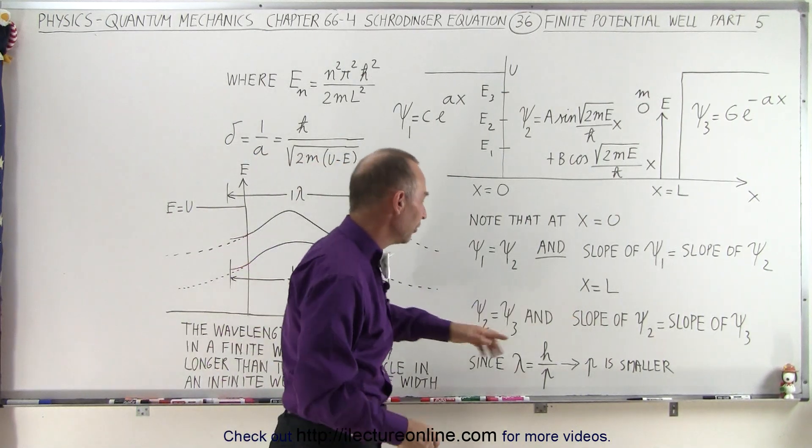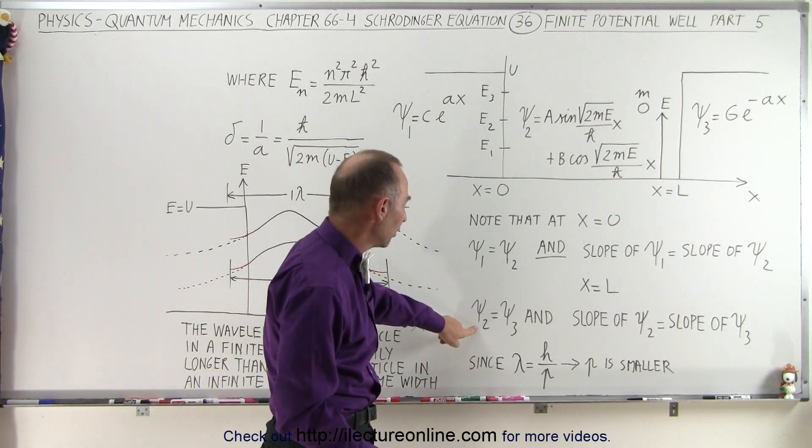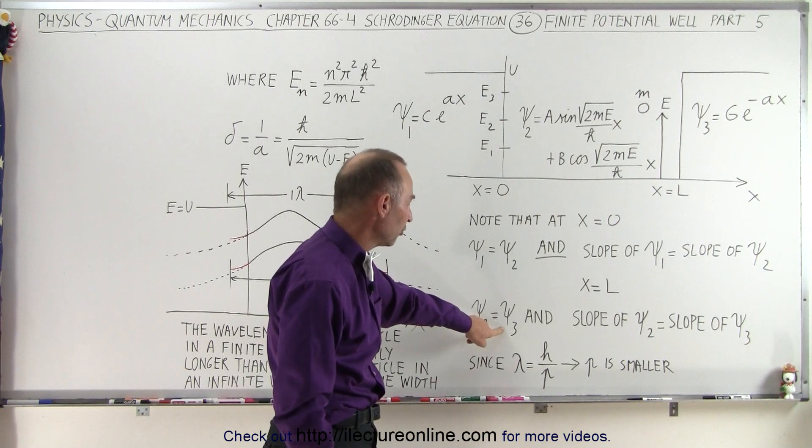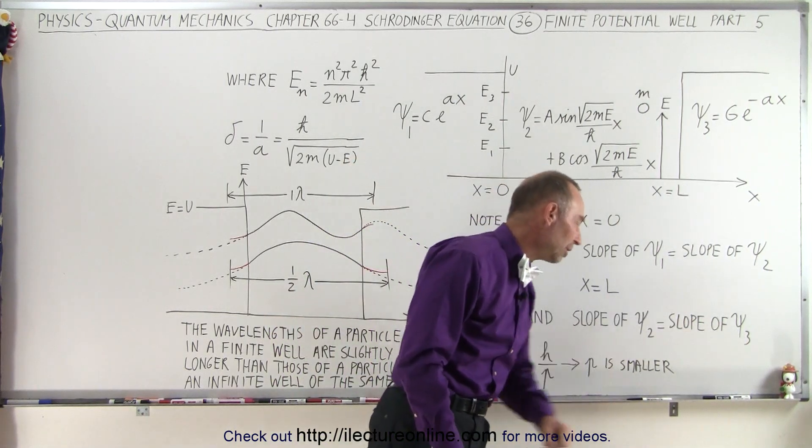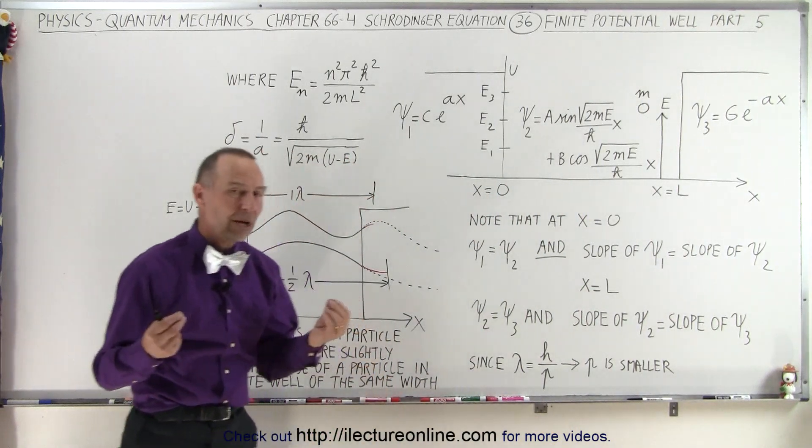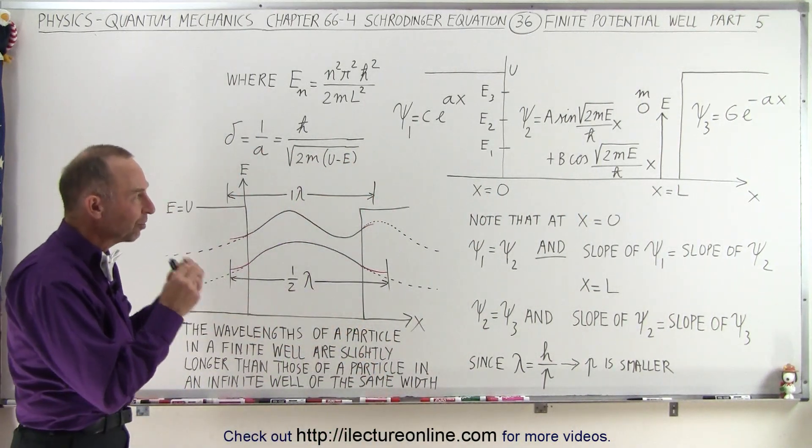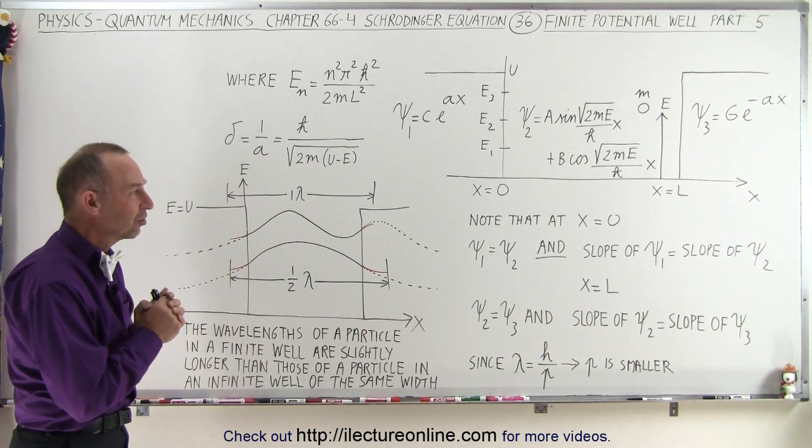And at x equals L, no different, the value of the function at region 2 must equal the value of the function at region 3, and the slope of region 2 must equal the slope of region 3. So that's why we know that there's only specific values of the function that can exist.